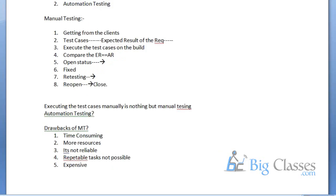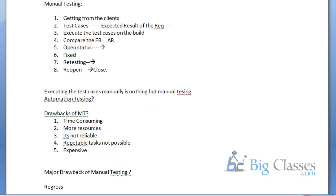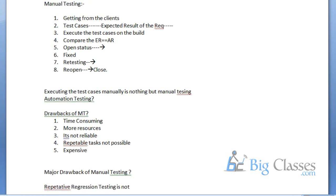The major drawback of manual testing is regression testing. Frequent or repetitive regression testing is not possible manually. To work on this drawback, we take the help of automation testing.